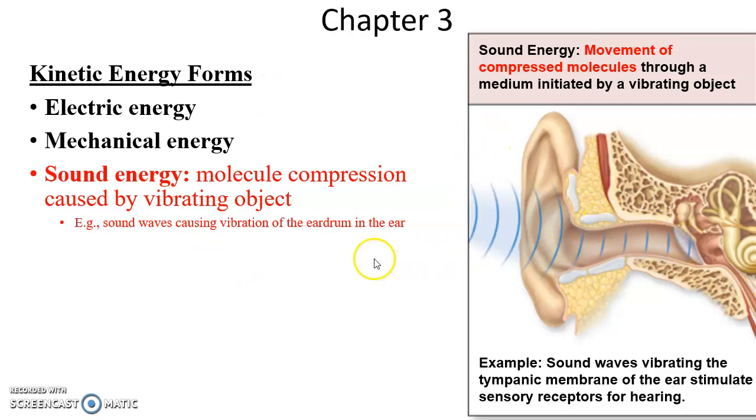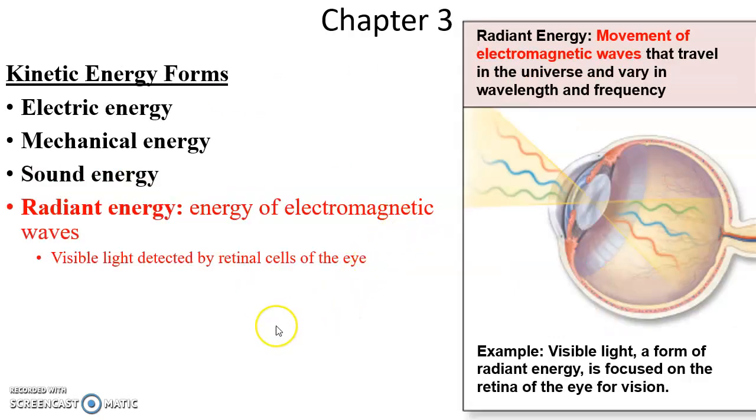Radiant energy is energy of electromagnetic waves. Light, for instance, is a form of electromagnetic waves. Visible light can be detected by our retinal cells. The energy of the visible light can be turned into electric energy in the neuron energy, a neural impulse.